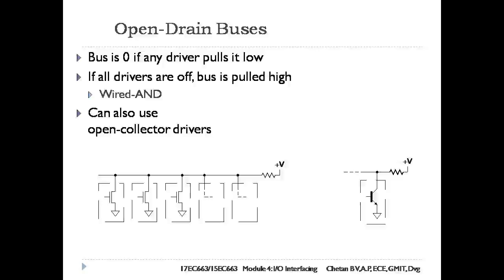Open Drain Buses: Each driver connects the drain terminal of a transistor to the bus signal. When any of the transistors is turned on, it pulls the bus signal to a low logic level. When all transistors are turned off, a termination resistor pulls the bus signal up to a high logic level. If multiple drivers try to drive a low logic level, their transistors simply share the current load. If there is a conflict, the low-level drivers win.